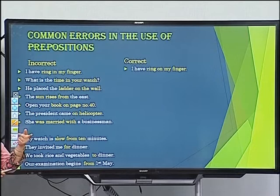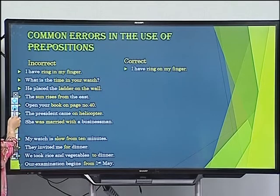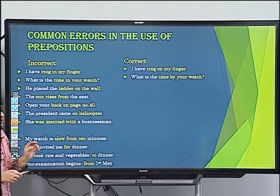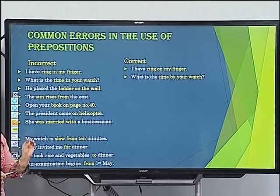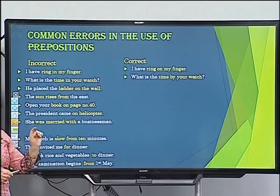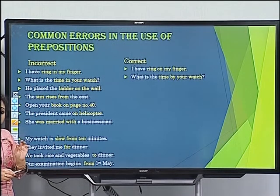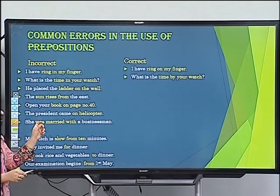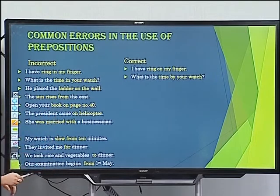Error: 'What is the time in your watch?' Incorrect. When referring to a watch for time, use 'by.' Correct: 'What is the time by your watch?' Also, 'my watch is slow by 10 minutes.' When mentioning time in relation to a watch, the preposition 'by' is used.